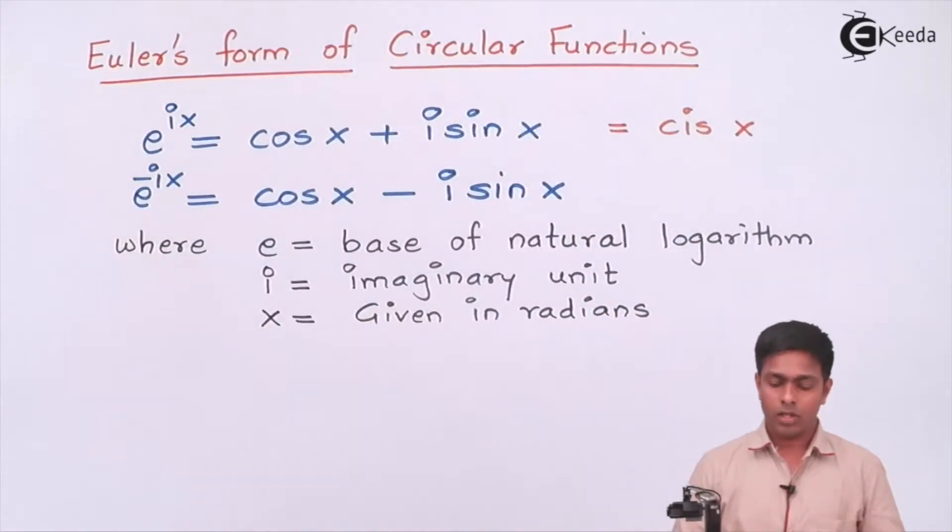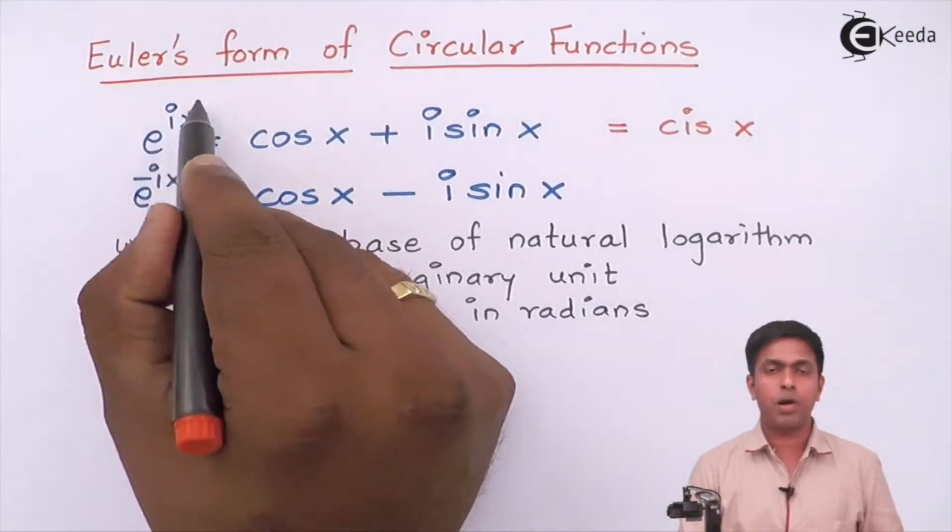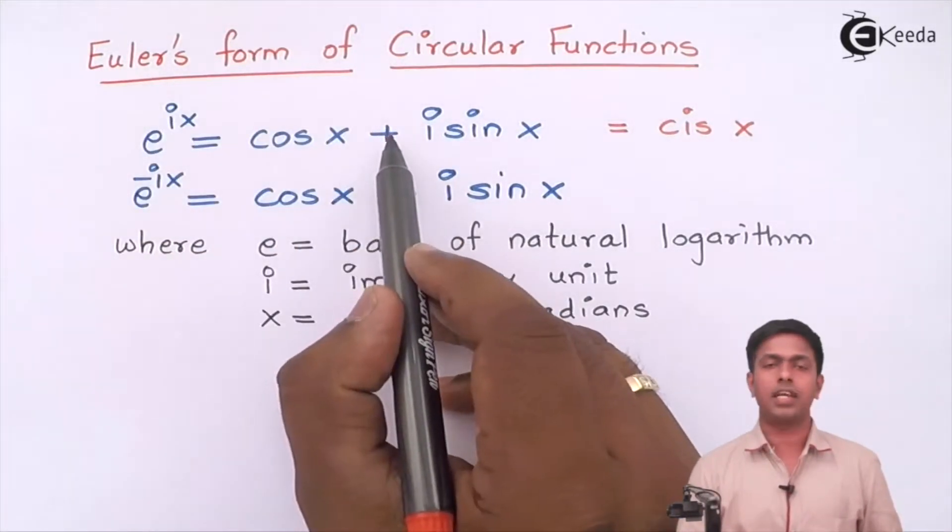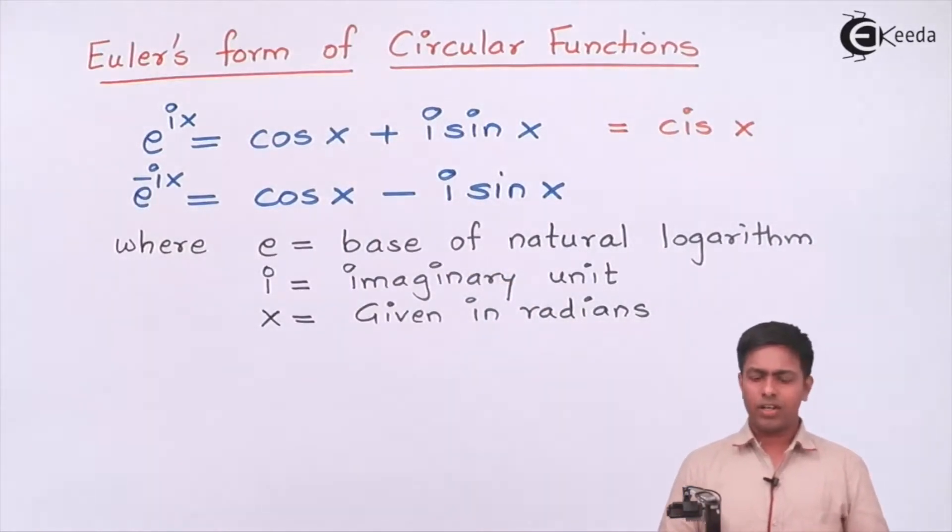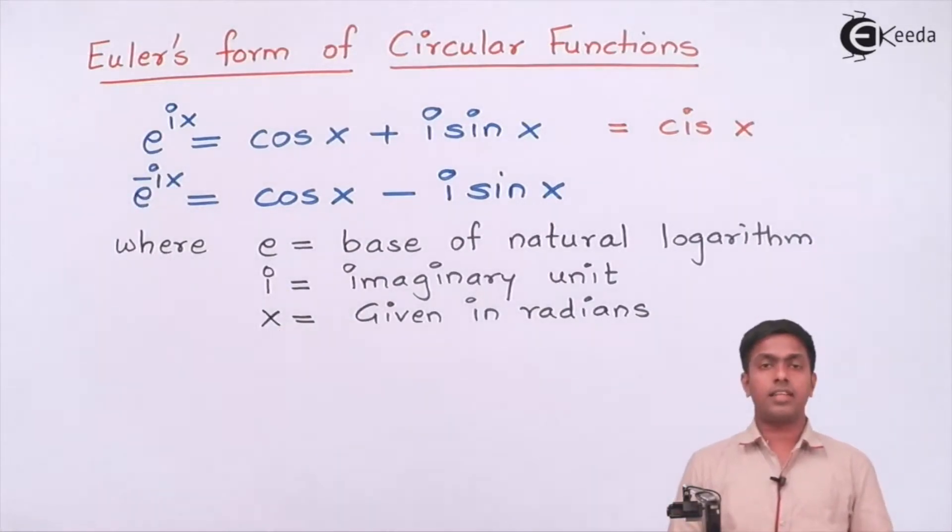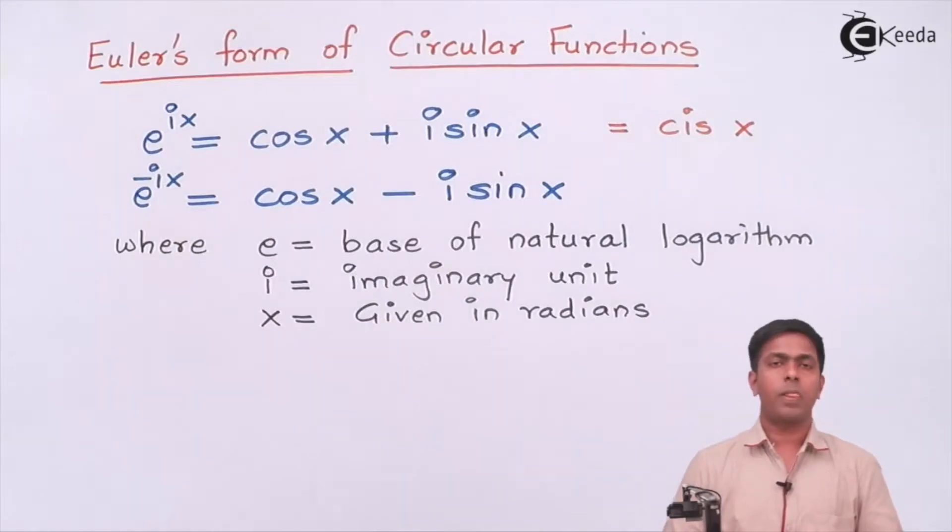Here if you see, when this power is positive the middle sign is plus, and when the power is negative it is negative. Here, e is the base of natural logarithm, i is the imaginary unit with value square root of -1, and x is a real number given in radians.